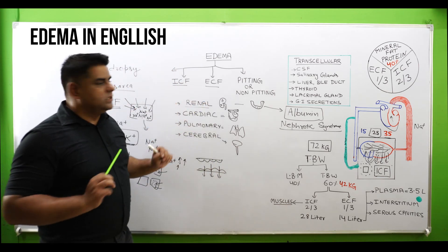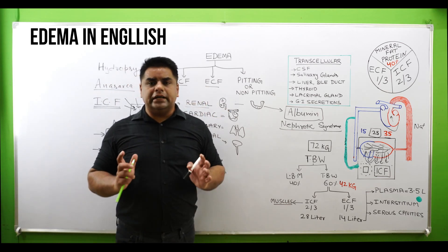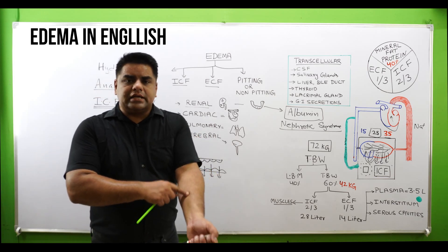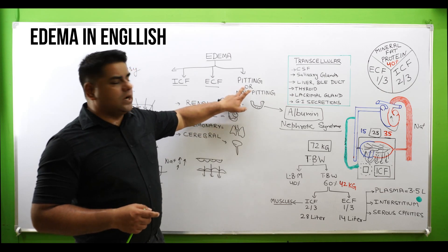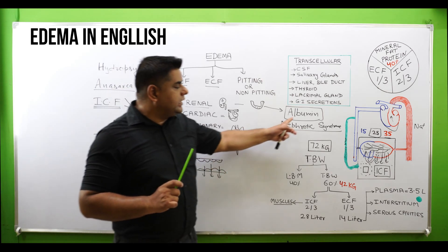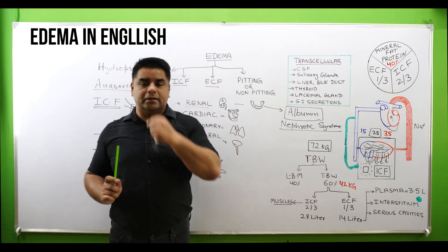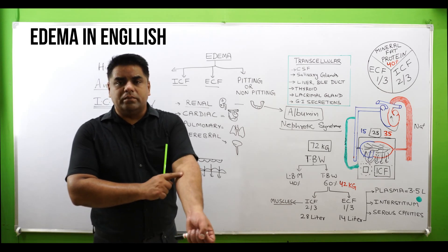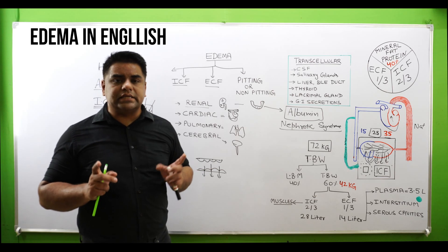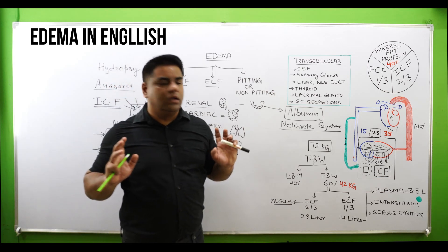In pitting edema, when the lower limbs are pressed with the thumb, it makes a pit-like structure. This occurs because in the extracellular space there is only accumulation of fluid — no proteins are present — so the fluid is displaced by pressure. If no pit is formed and the area feels hard, it is non-pitting edema, because plasma proteins are accumulating in the extracellular space, making it hard with no pit formation.